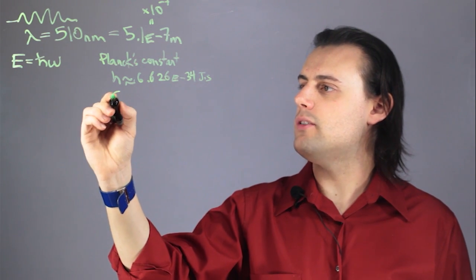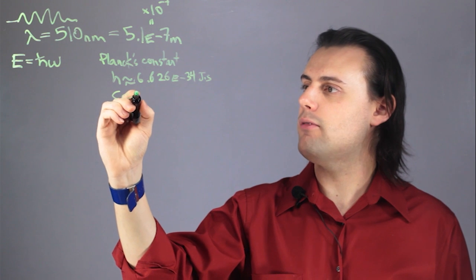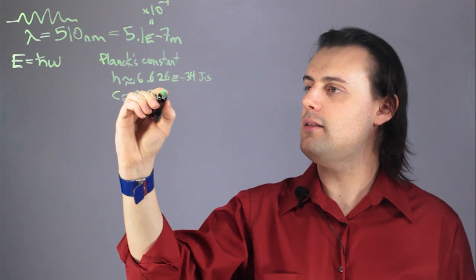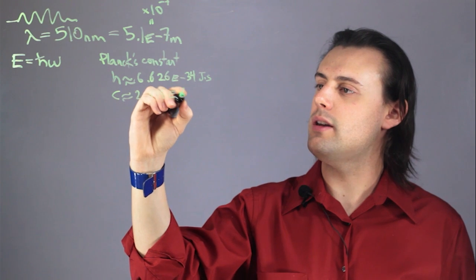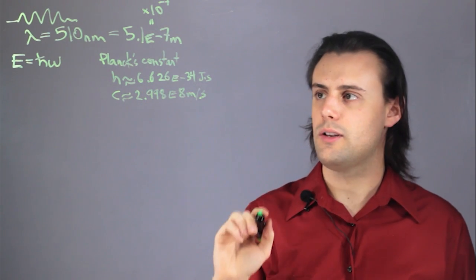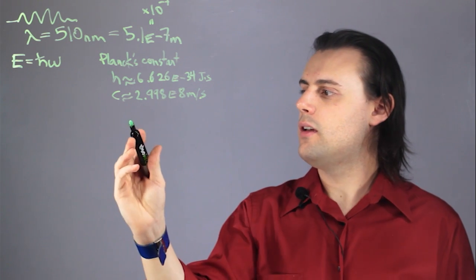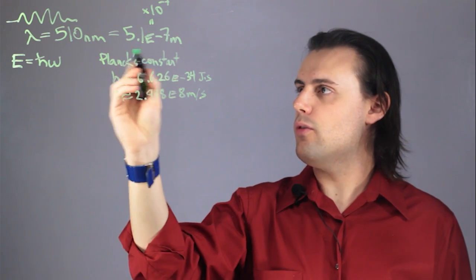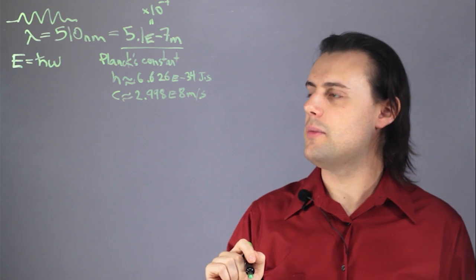I'm also going to need the speed of light, which is approximately equal to 2.998 times 10 to the 8 meters per second. So here I'm just going to be using SI units. And I already know the wavelength, 5.1 times 10 to the negative 7 meters.